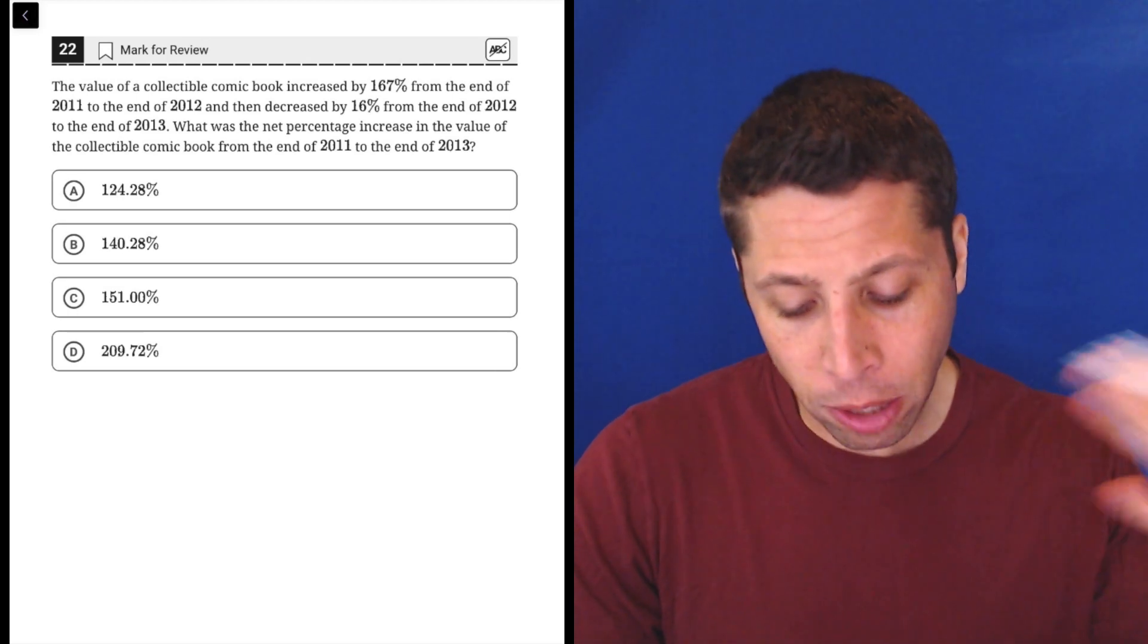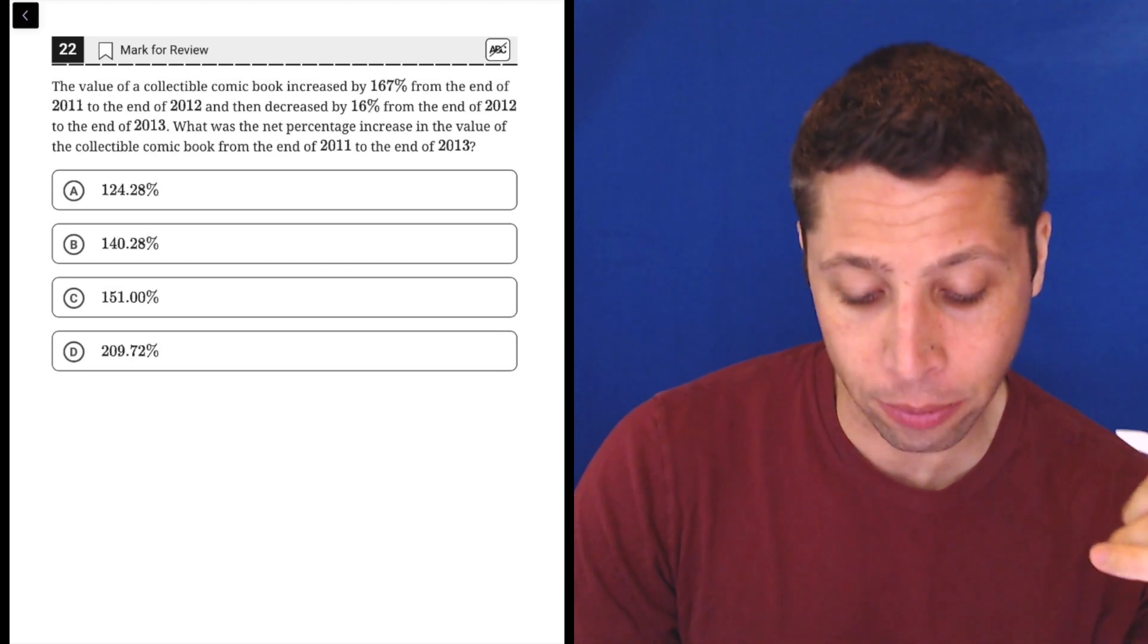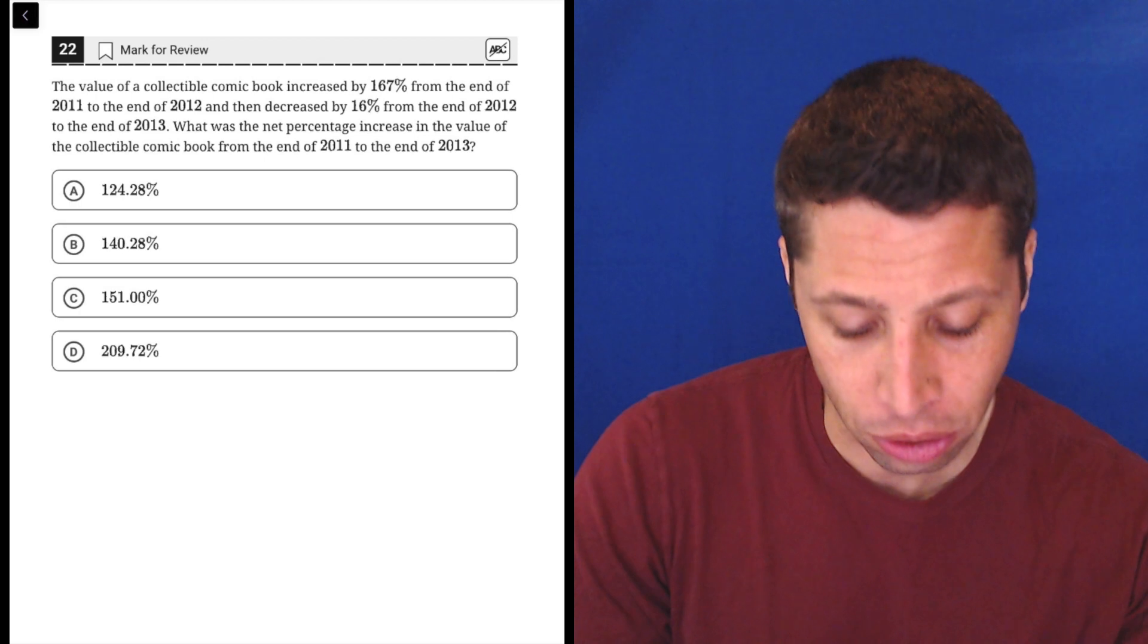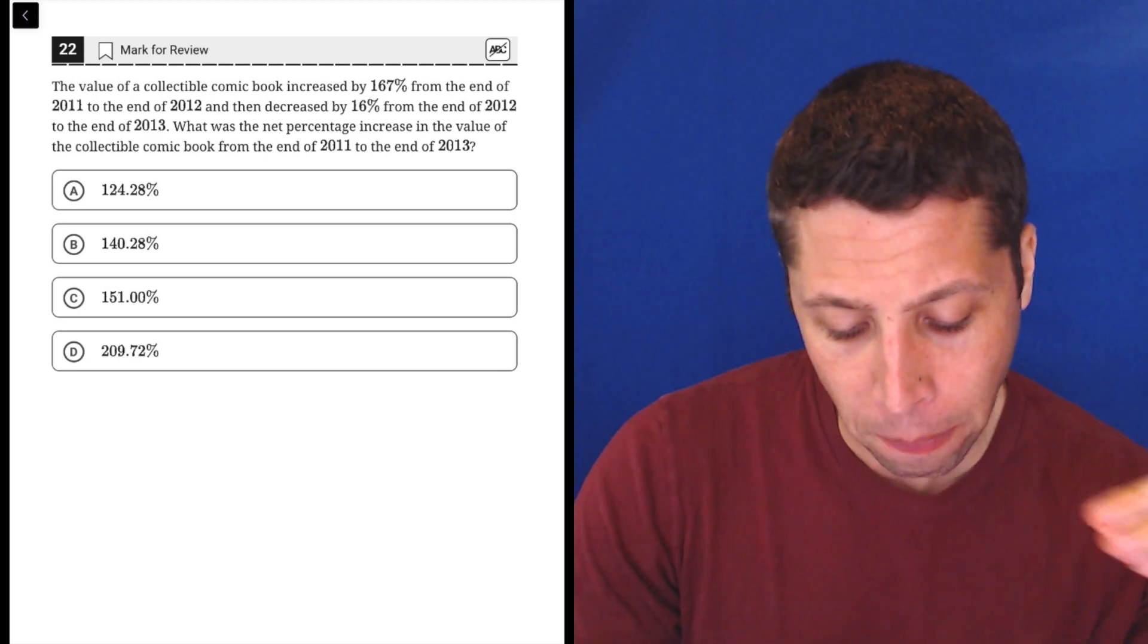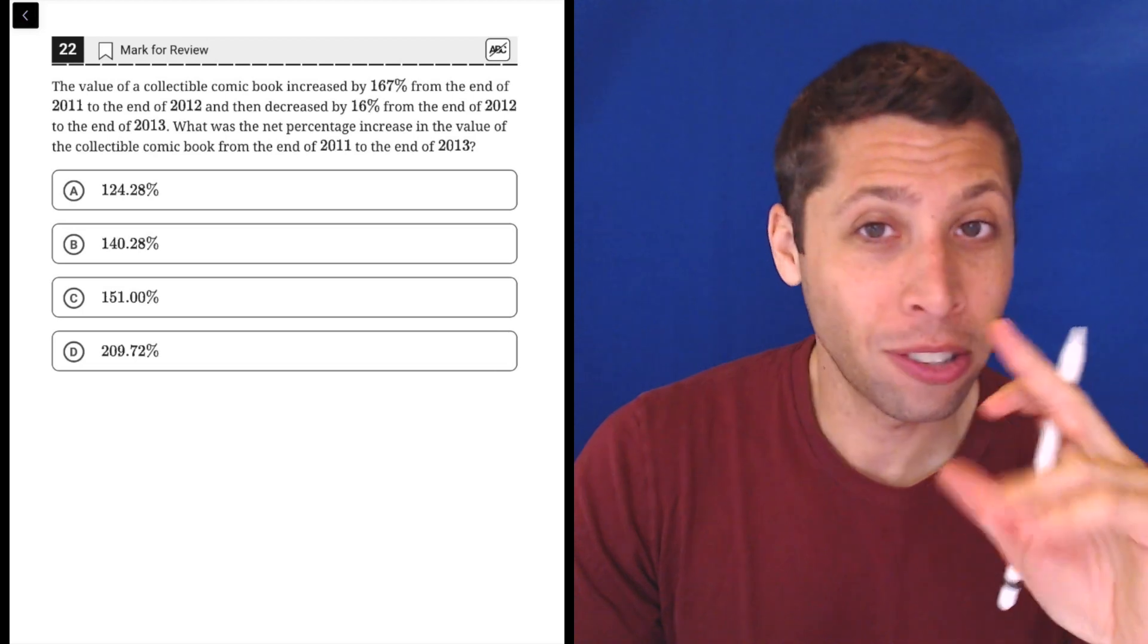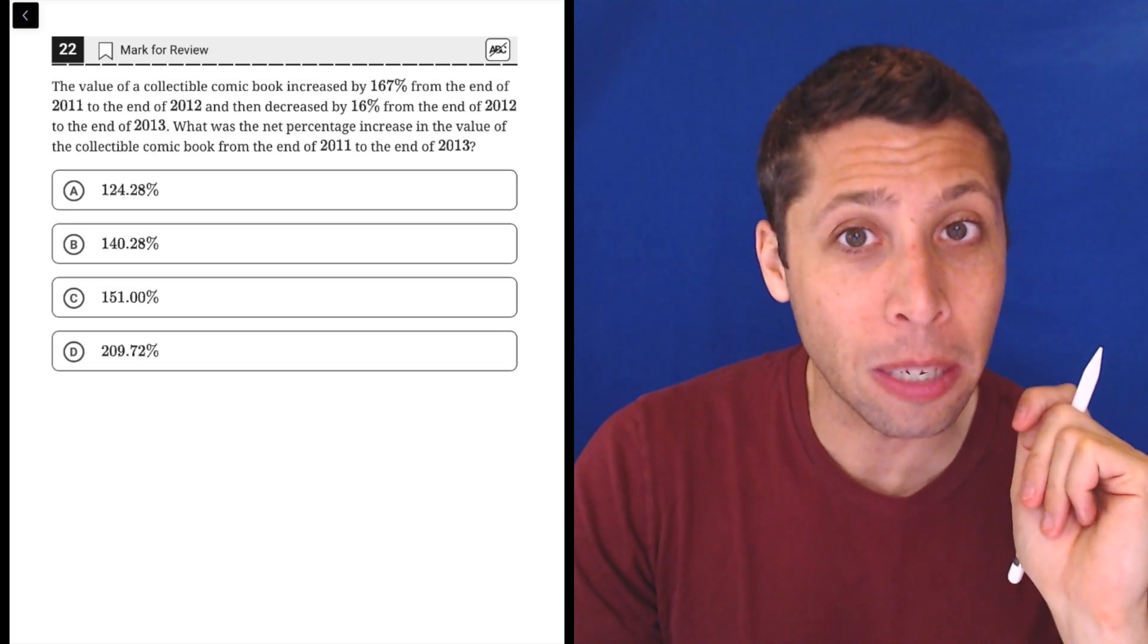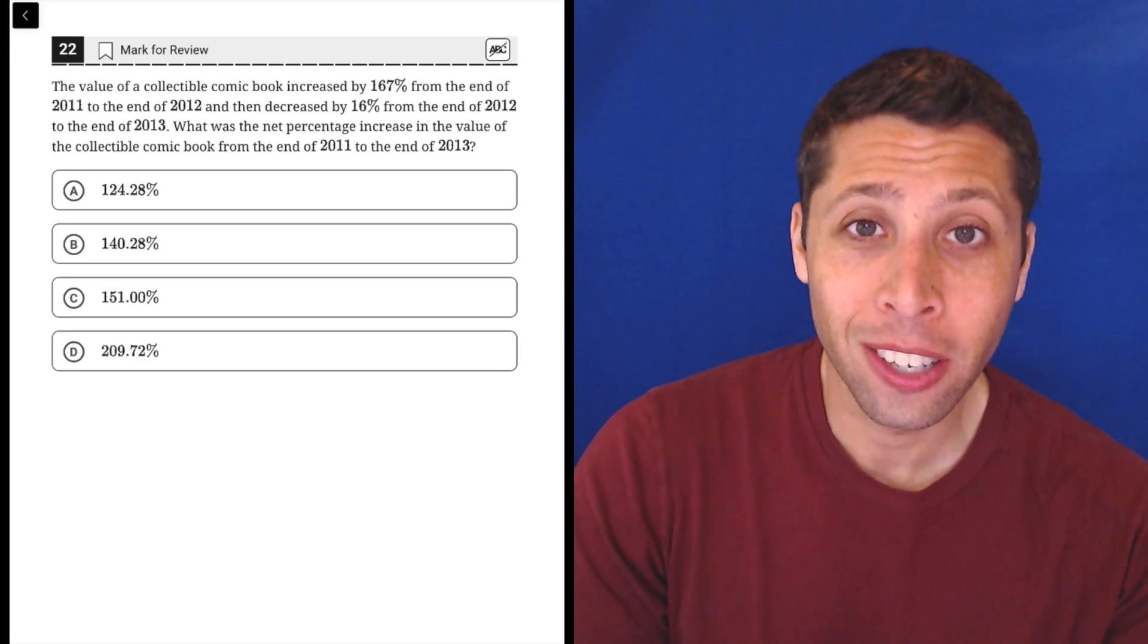So here's what I would do here. I've got the value of a collectible comic book increased by 167% from the end of 2011 to the end of 2012, and then decreased by 16% from the end of 2012 to the end of 2013. What was the net percentage increase in the value of the collectible comic book from the end of 2011 to the end of 2013? Seems like a lot of information, right? Too much, almost. Here's the thing, though. I know this is not enough information. They left out one very important thing. How much did this comic book cost to start?